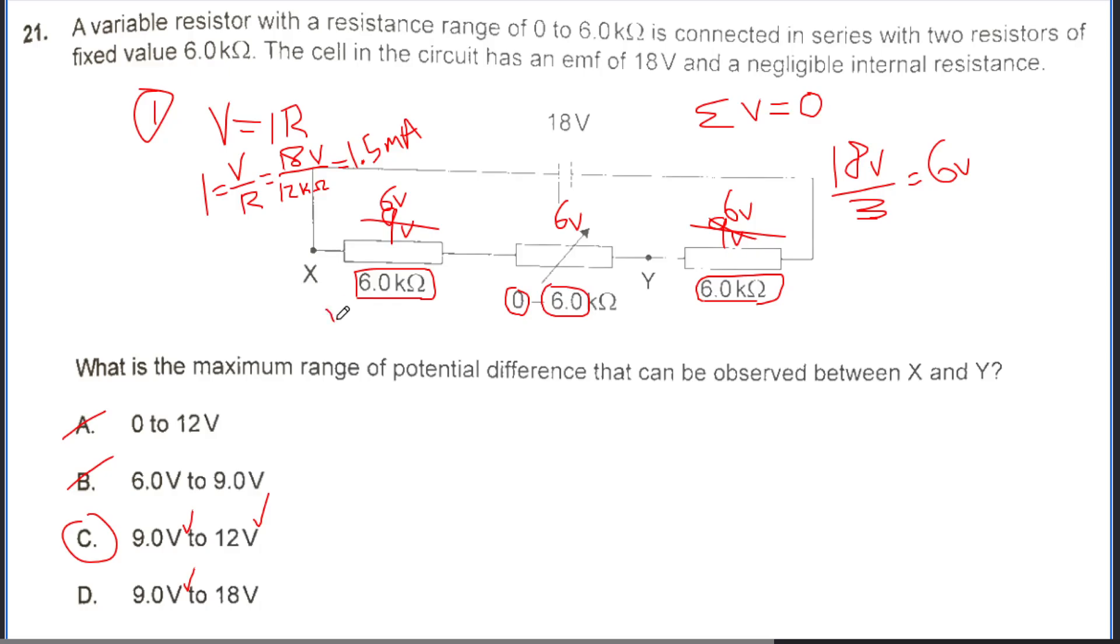So that's for this first case where the variable resistor is 0. V sub 1 is going to equal I times R sub 1. I is this 1.5 milliamps, and R sub 1 is that 6 kiloohms. So if we multiply these, we get 9 volts. So that verifies our answer as C or D.